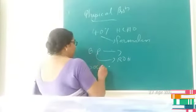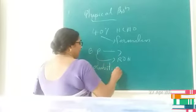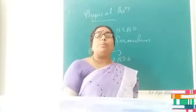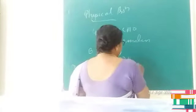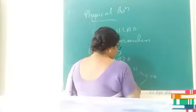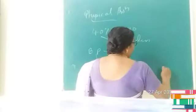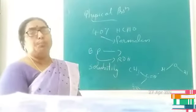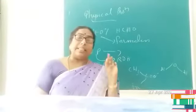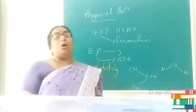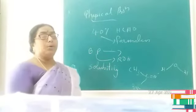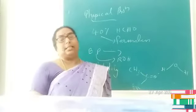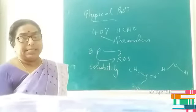Next, considering solubility: the lower members of aldehydes and ketones are able to form hydrogen bonds with water. Due to this ability to form hydrogen bonds with water, the lower members of aldehydes and ketones are soluble in water. But as the molecular mass increases, solubility decreases.